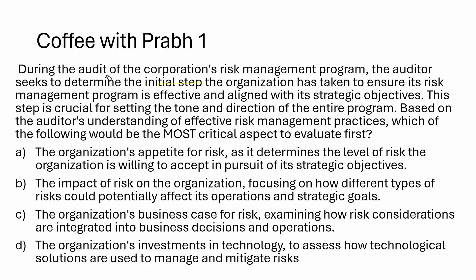First coffee shot. During the audit of a corporate risk management program, the auditor seeks to determine the initial steps the organization has taken to ensure the risk management program is effective and aligned with the strategic objective. This is talking about a top-down approach. This step is crucial for setting the tone and direction of the entire program. Based on the auditor's understanding of effective risk management practice, which of the following would be the most critical aspect to evaluate first?